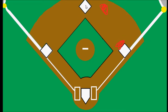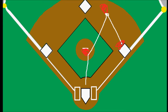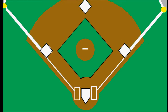An assist can also occur when a player deflects a ball. For example, if a ball is hit hard and it hits the pitcher on the leg and bounces over to the second baseman, who picks it up and throws on to first base — we give the pitcher credit for an assist, the second baseman credit for an assist, and the first baseman credit for the put out.